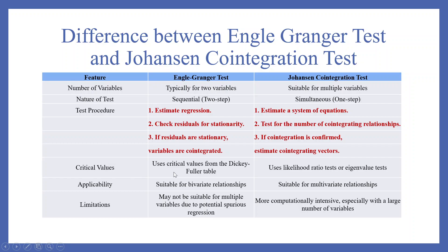Regarding critical values: Engle-Granger uses critical values from the Dickey-Fuller table, while Johansen uses the likelihood ratio test or eigenvalue test. Applicability: Engle-Granger is suitable for bivariate relationships; Johansen is suitable for multivariate relationships. Limitations: Engle-Granger may not be suitable for multiple variables due to potential spurious regressions, while Johansen is more computationally intensive, especially with a large number of variables.